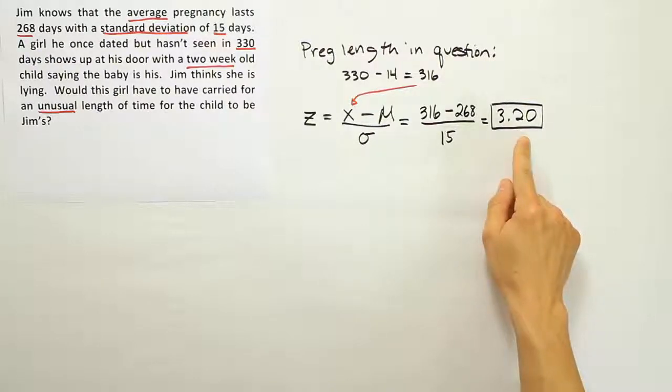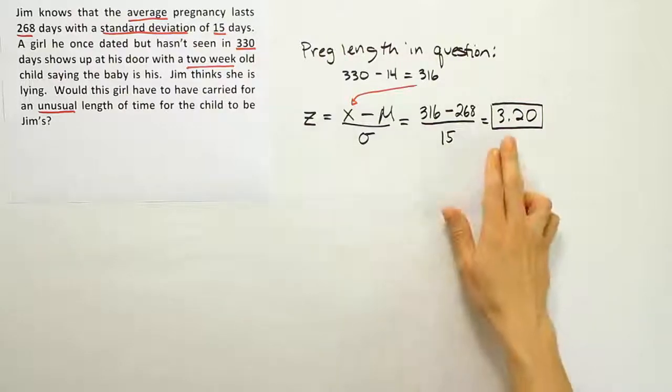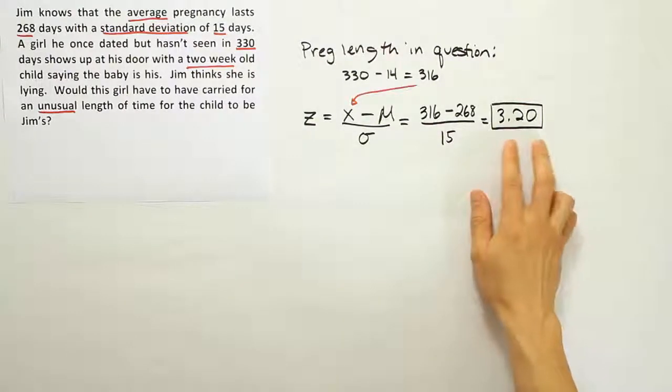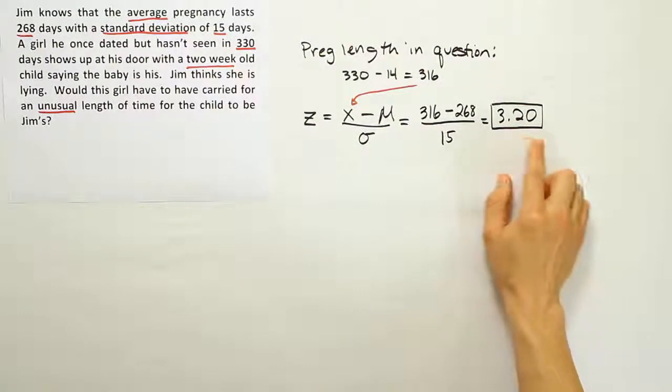Not impossible, of course, however. So we can't contend the girl to being a liar just because of that. But we can say that the length is unusual. And perhaps something like paternity tests would be in order, just to make sure. But that seems like a pretty long time to carry a child based on the z-score alone.